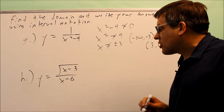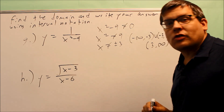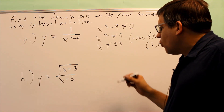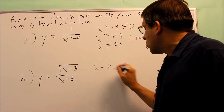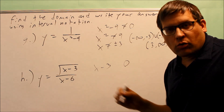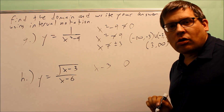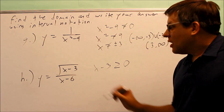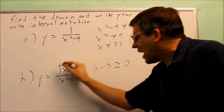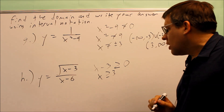The last example is the square root of x minus 3, over x minus 6. Two things are happening: the possibility of a square root of a negative number, and the possibility of dividing by 0. We handle both separately. For the square root in the numerator, we set x minus 3 greater than or equal to 0, because the radical is on top of the fraction, not the bottom. Solving gives x is greater than or equal to 3.